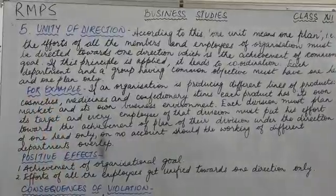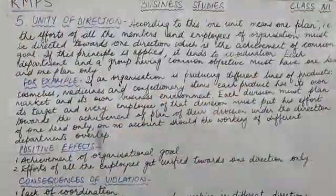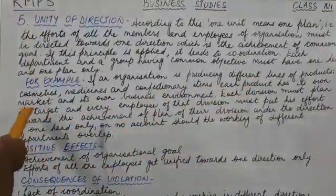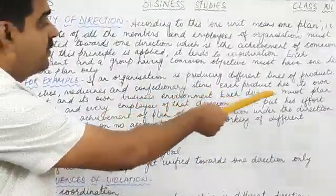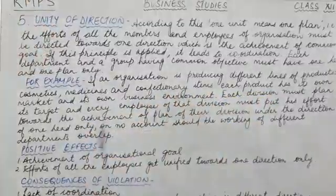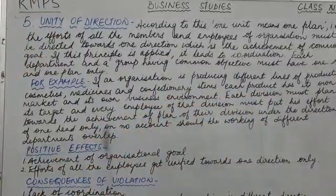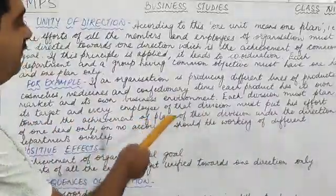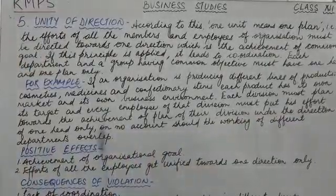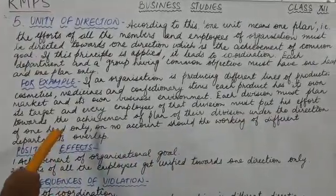We can take one example. If an organization is producing different lines of products — cosmetics, medicines, and confectionery items — each product has its own market and its own business environment. Each division must plan its target, and every employee of that division must put his efforts towards the achievement of the plan of their division under the direction of one head.